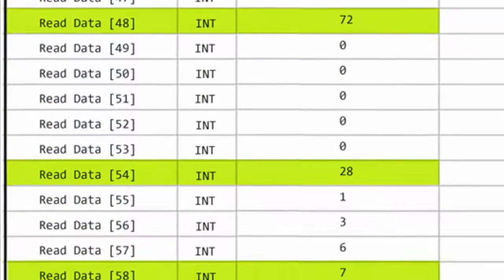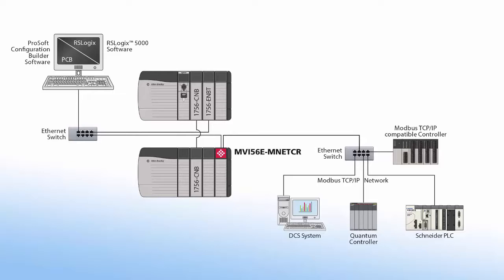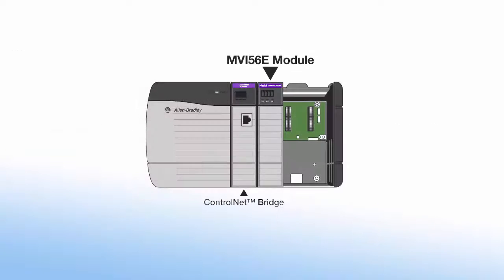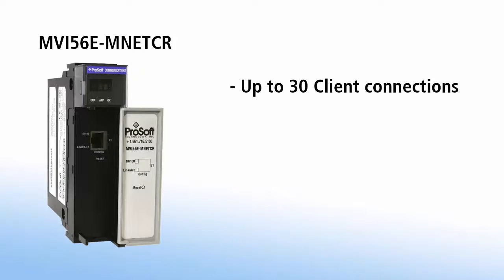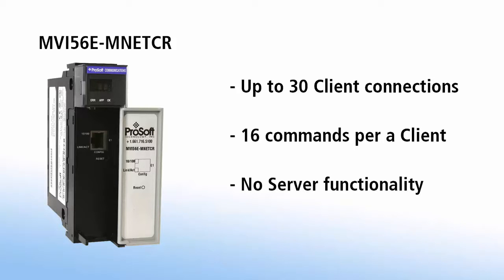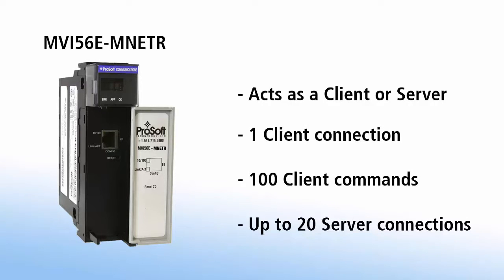Then we have the MVI56E MNET-R and MNET-CR for remote ControlNet rack applications. ControlNet has limitations to how much data you can send in one packet, and these modules are optimized for that issue. The MNET-CR supports 30 client connections with 16 commands each, but has no server functionality. The MNET-R can act as a client and a server, and has functionality similar to the MNET in all other respects.